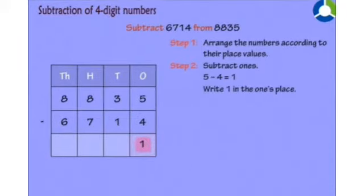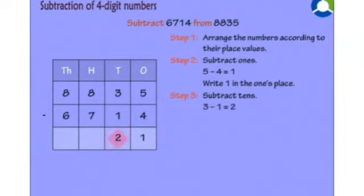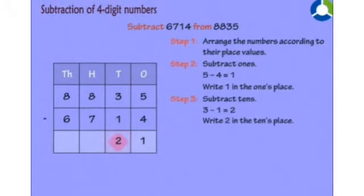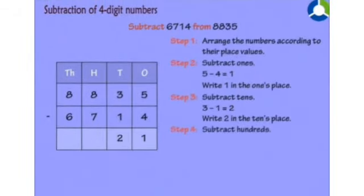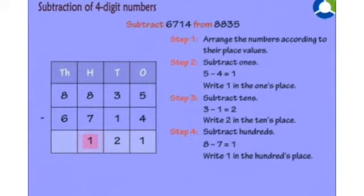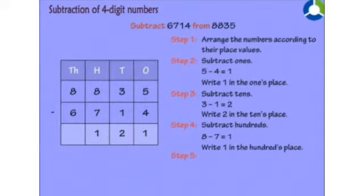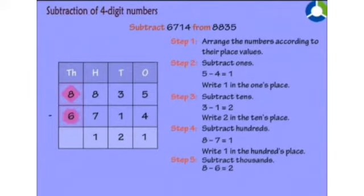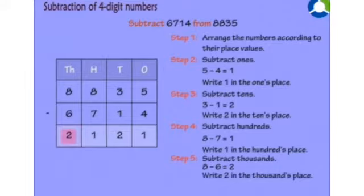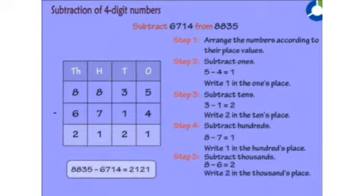...1. Write 1 in the 1's place. Step 3: Subtract 10's — 3 minus 1 equals 2. Write 2 in the 10's place. Step 4: Subtract 100's — 8 minus 7 equals 1. Write 1 in the 100's place. Step 5: Subtract 1000's — 8 minus 6 equals 2. Write 2 in the 1000's place. So 8835 minus 6714 equals 2121.